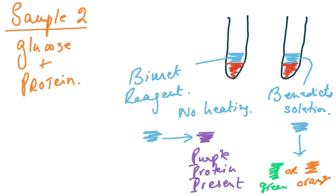For the second test tube with sample 2, add Benedict's solution and observe the color change — it will change to green or orange depending on how much glucose is present. Sample 2 contains only glucose and protein, so only these two tests are needed.